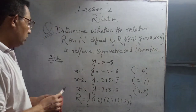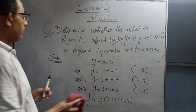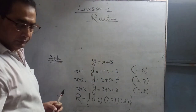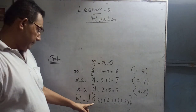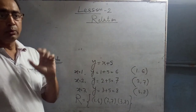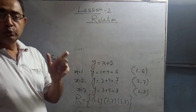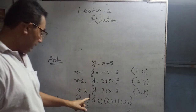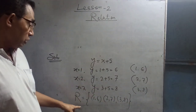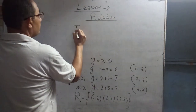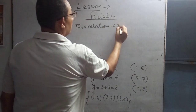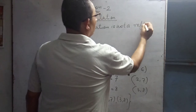Now you have to identify whether it is reflexive, symmetric, or transitive. For reflexive, identical elements are required: (1,1), (2,2), (3,3). But here we only have (1,6), (2,7), (3,8). Therefore, this relation is not reflexive.